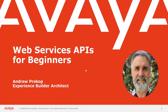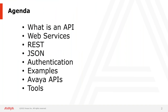Web Services APIs for Beginners — here's my agenda. I'll start with what an API is, what it is and what it isn't. Then I'll jump into web services: what they are, why they're important, and how to think about them a little differently. Then we'll get into some technical terminology — REST, JSON — so that when somebody talks about REST, you're not scratching your head. I'm not going to teach you to be programmers, but I want you to understand the terminology applied to web services.